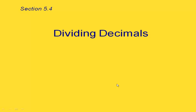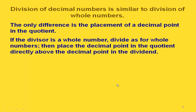This is section 5.4, dividing decimals. Division of decimal numbers is a lot like division of whole numbers. The only difference is where we put the decimal point in our quotient. If our divisor is a whole number, we divide just like we do with whole numbers and then put our decimal point in the quotient directly above the decimal point in our dividend.